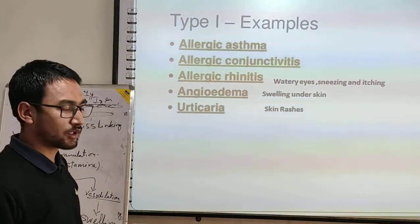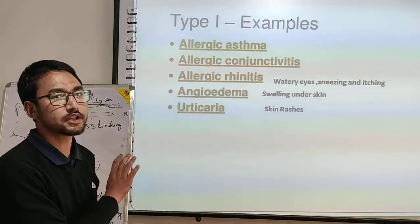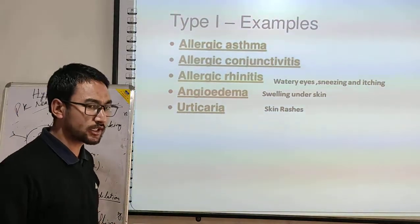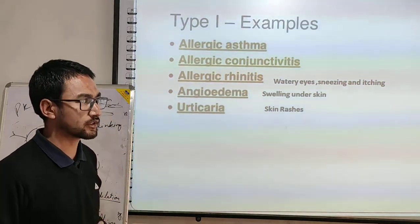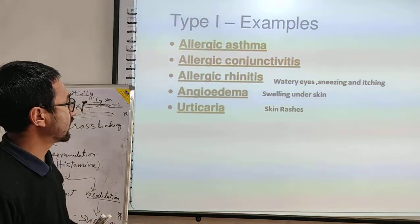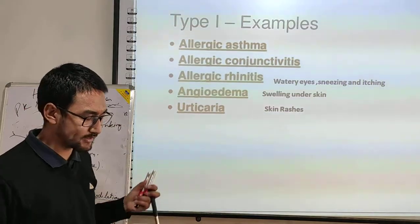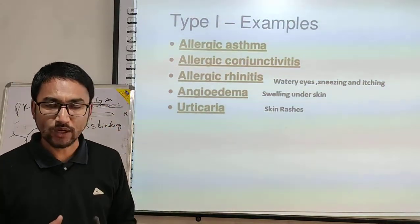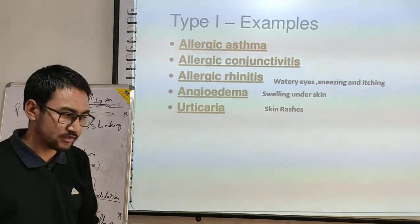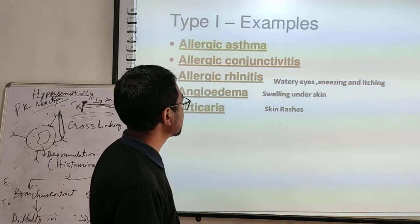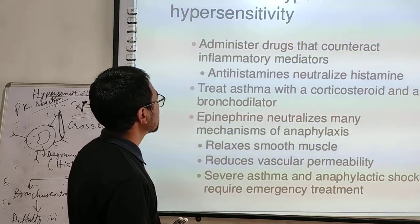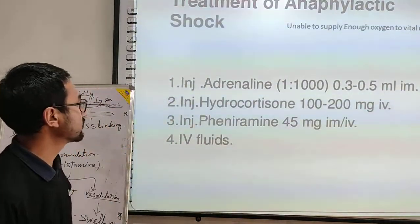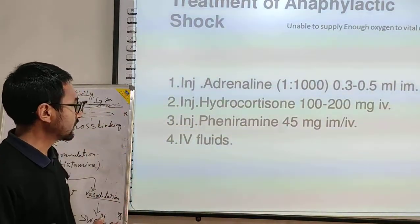Examples of Type 1 hypersensitive reactions include allergic asthma, allergic conjunctivitis — problems in the eyes when allergic substances are present, and allergic rhinitis — symptoms of which include watery eyes, sneezing, and itching. Angioedema involves swelling under the skin, and urticaria involves rashes over the skin. Drugs used for treatment include adrenaline, hydrocortisone, and pheniramine.